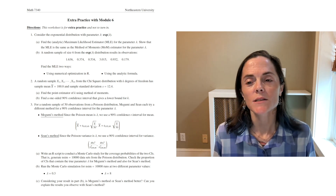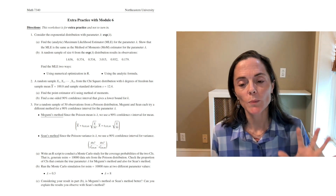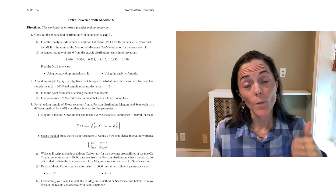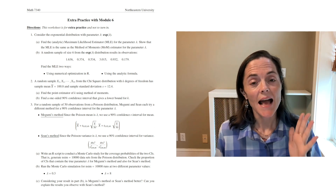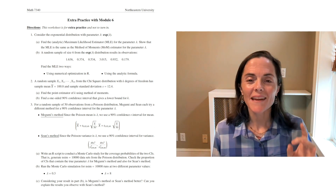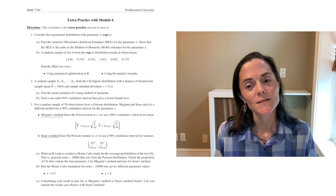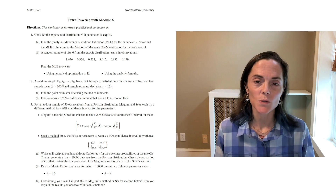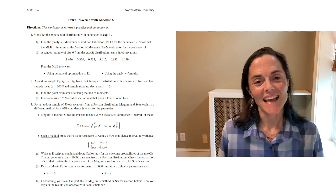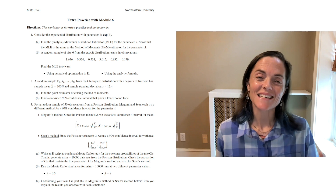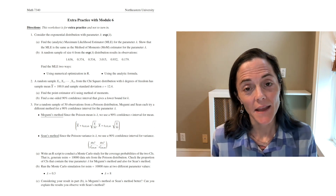Hello class, here's extra practice with module six. You'll notice we have three questions, each one has multiple parts. The topics are point estimation of a parameter, confidence intervals which is the interval estimation, and then we'll use a Monte Carlo simulation to address coverage probabilities for confidence intervals. What is not on this that we discussed in the module is bootstrap confidence intervals — you should have worked through the Canvas pages on that topic, but we don't have any on this extra practice.